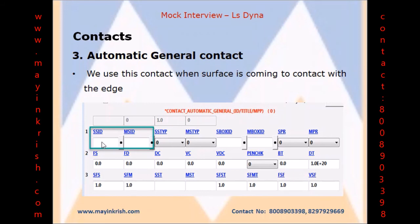Only Slave side has to be activated, no need of any Master Surface. This contact will not work if there are any initial penetrations between the beams.